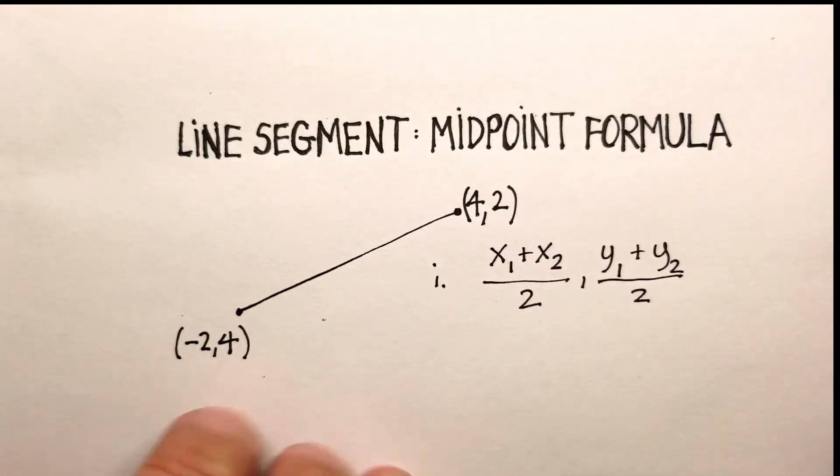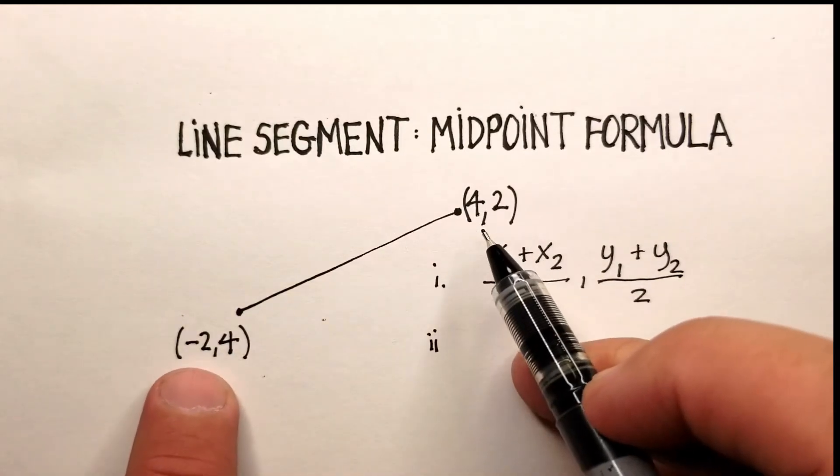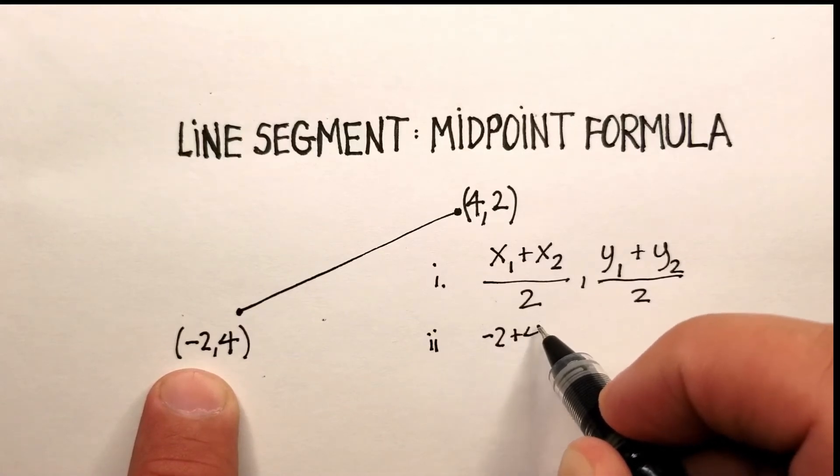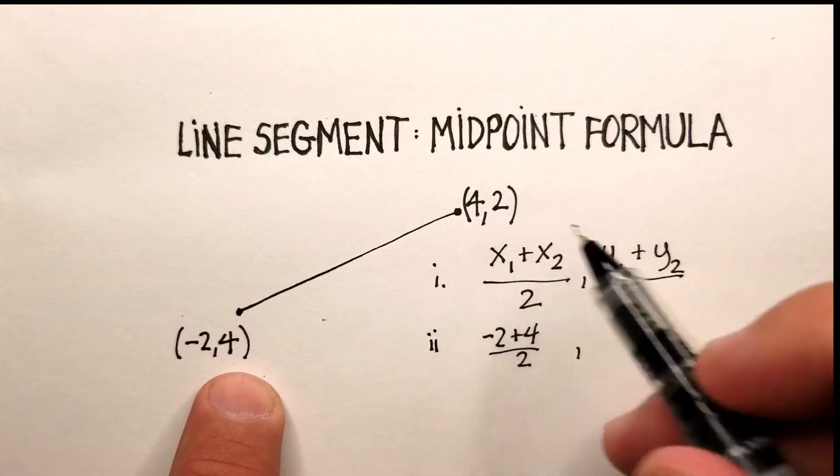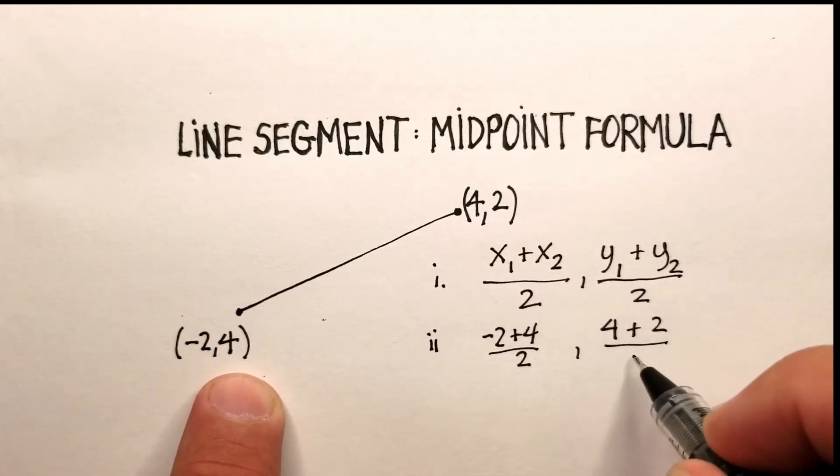Now in this particular line segment, what is the midpoint? So let's just go ahead and fill in our numbers. Negative 2 plus 4 divided by 2. And over here, we're going to put 4 plus 2 divided by 2.